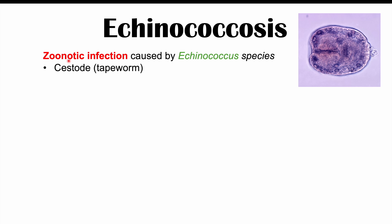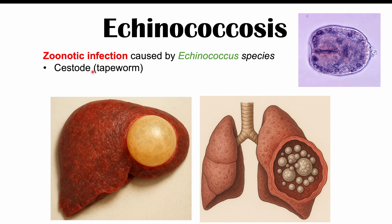Echinococcus are cestodes, or tapeworms. Some of the problems from getting infected with this particular tapeworm aren't like other tapeworm infections, where a tapeworm would reside in the gastrointestinal system. They actually can migrate and form cysts in different parts of the body, including the liver and the lungs, depending on the species.